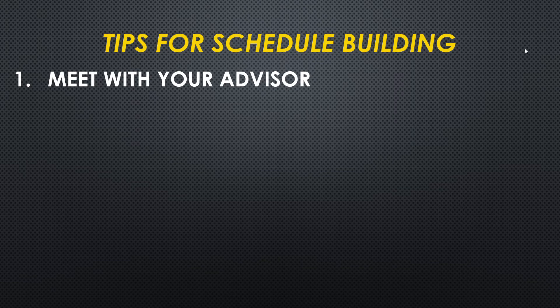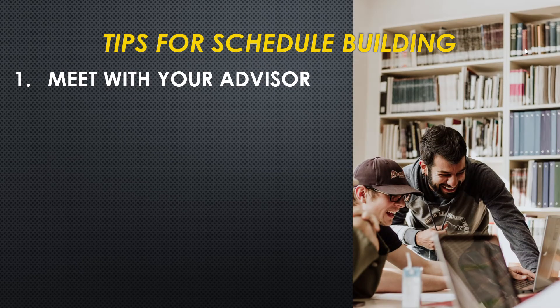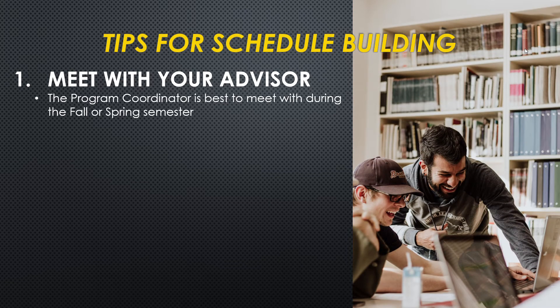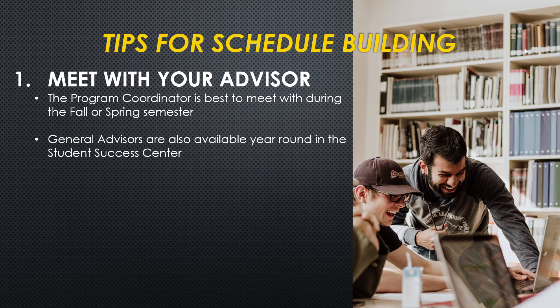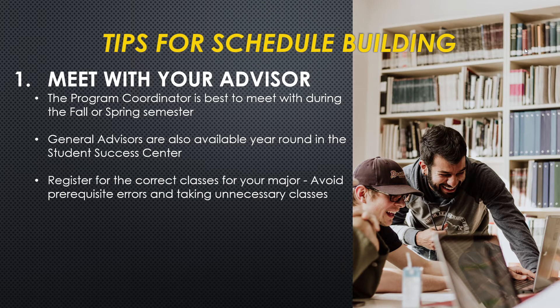Number one: meet with your advisor. The program coordinator is the best person to meet with during the fall or spring semester. General advisors are also available year-round in the Student Success Center. You will want to register for the correct classes for your major, avoid prerequisite errors, and avoid taking unnecessary classes.